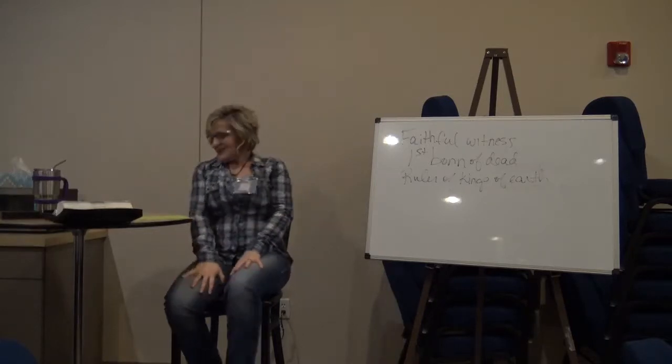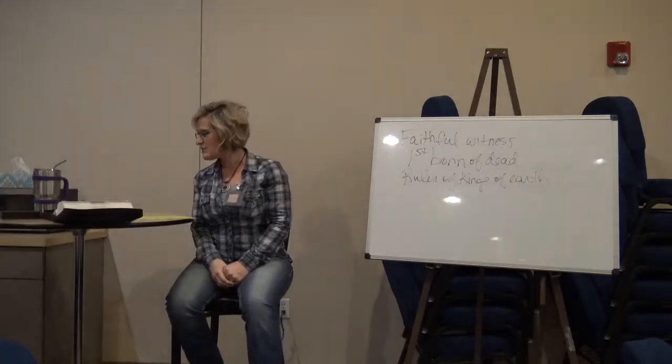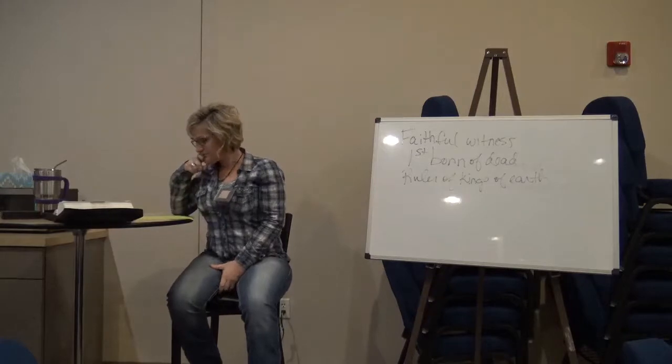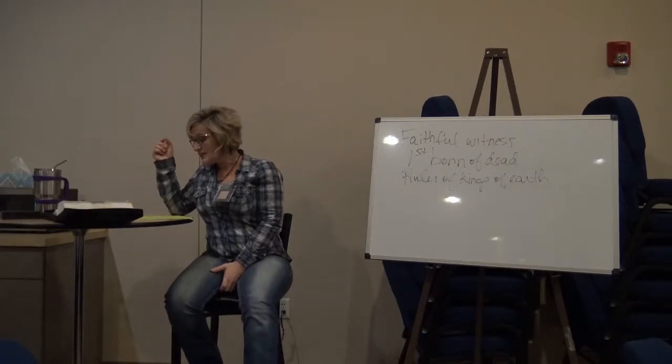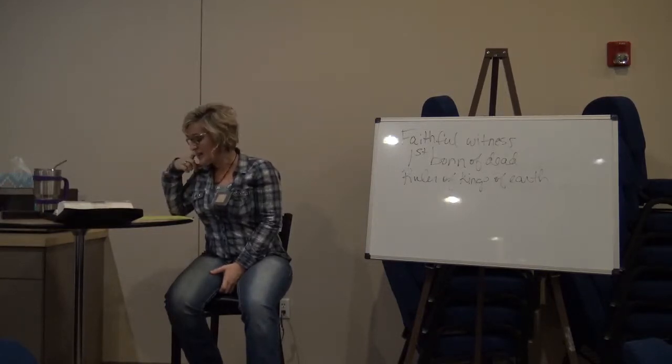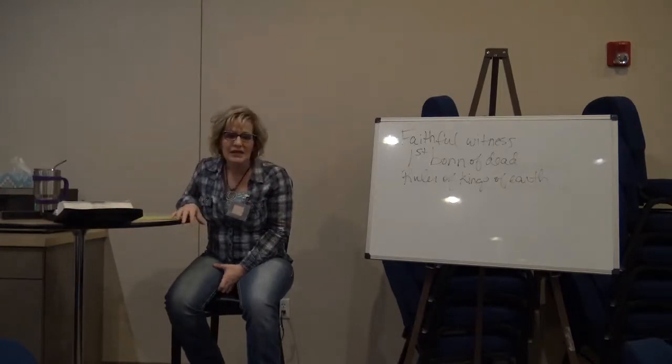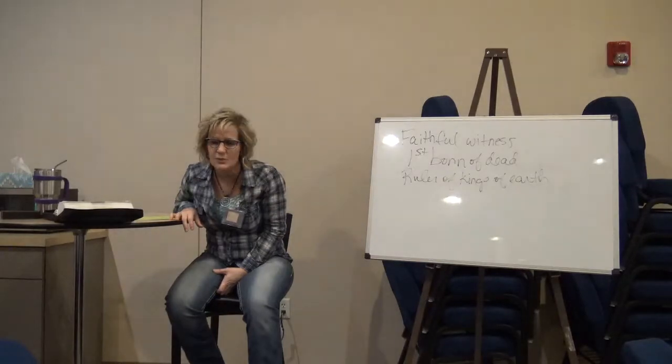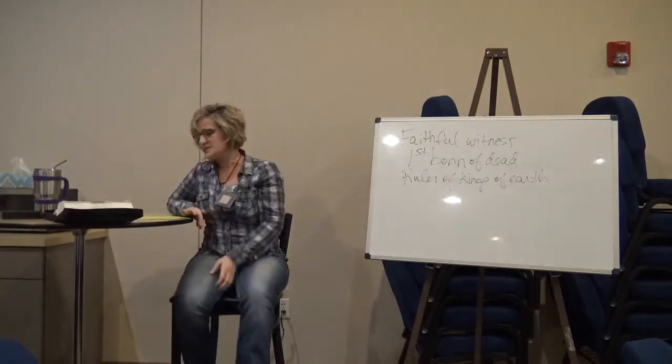With that said, tonight we're going to talk about the kingdom of God and this verse, Revelation 1:5-6. It says, 'And from Jesus Christ, the faithful witness, the firstborn of the dead and the ruler of the kings of the earth, to him who loves us and releases us from our sins by his blood, and he made us to be a kingdom, priests to his God and Father.' He made us a kingdom and priests. Look at your translations and tell me, what do some of your translations say in chapter 1, verse 6? He made us to be what?